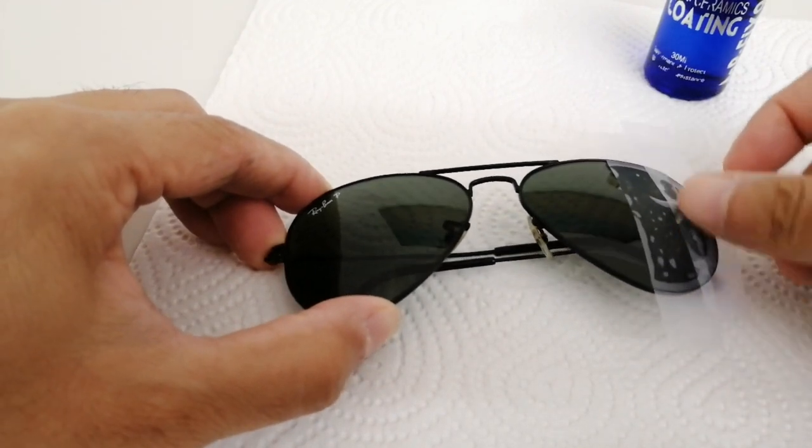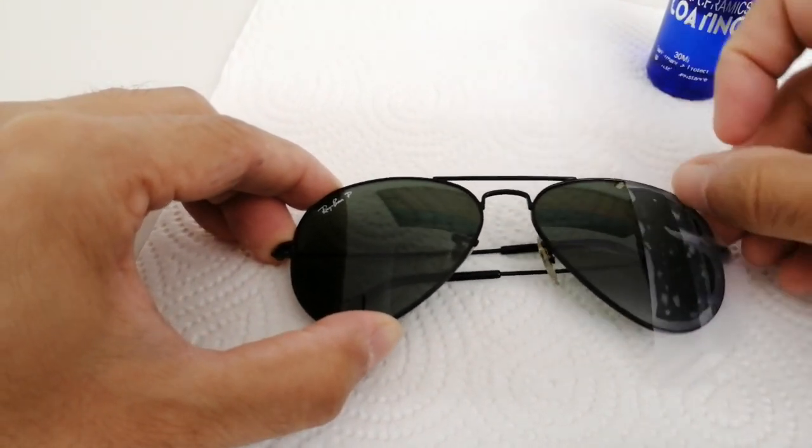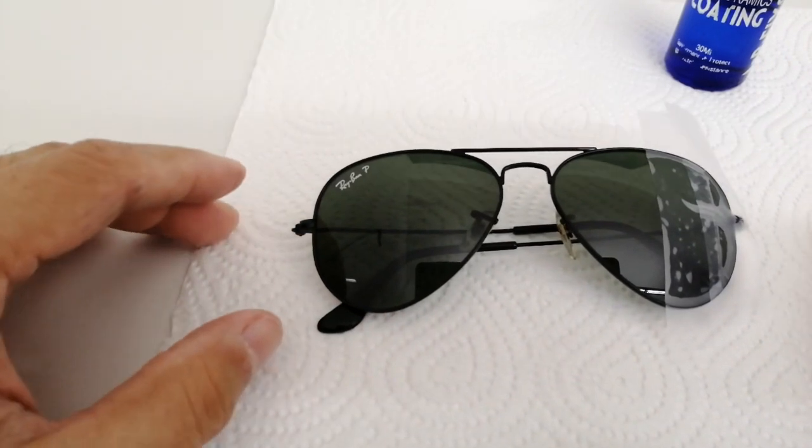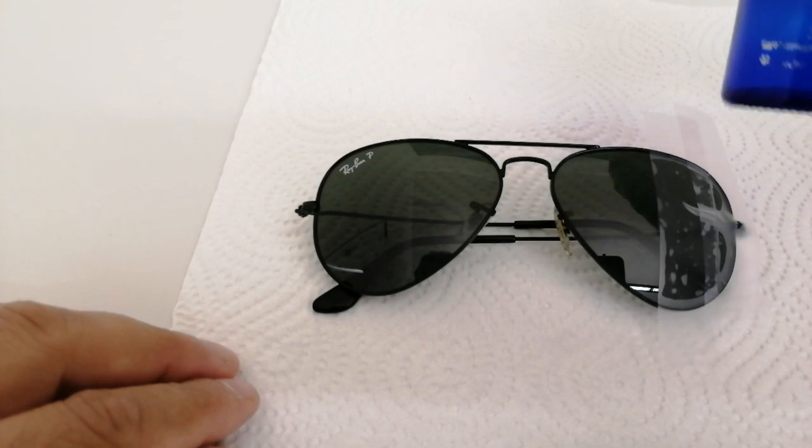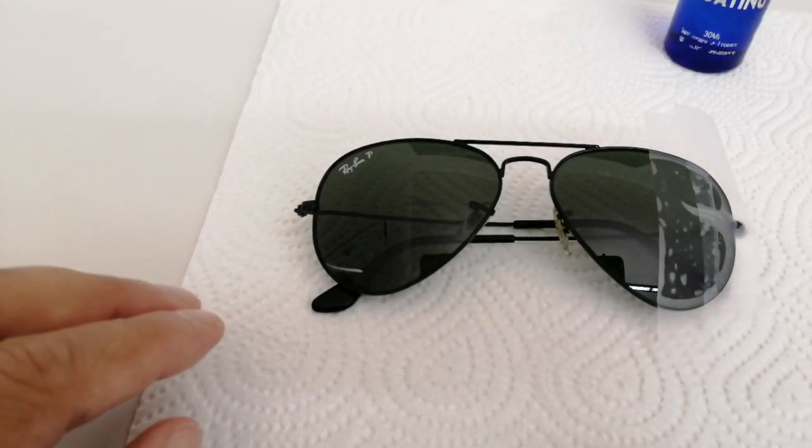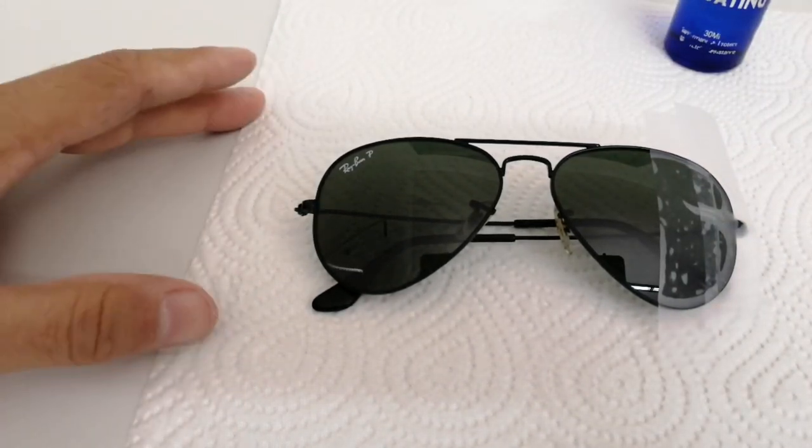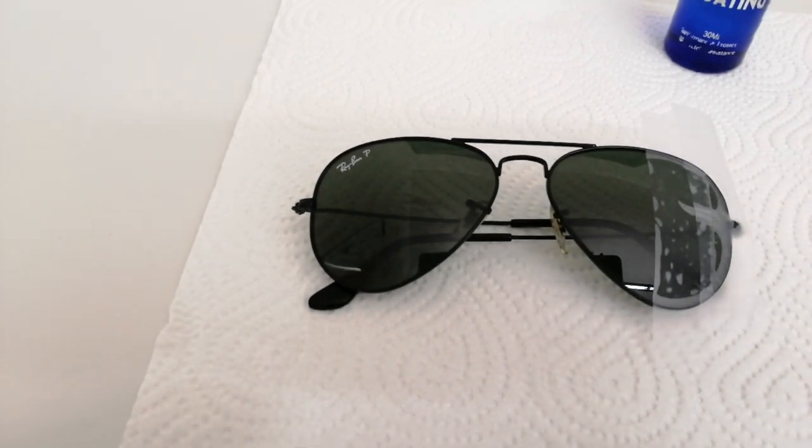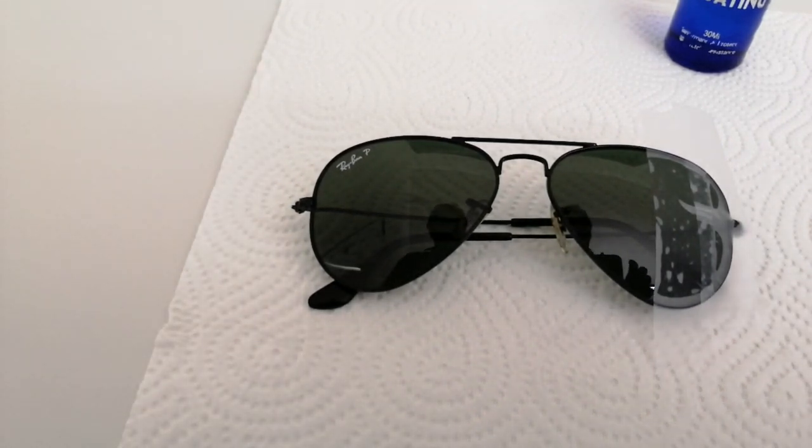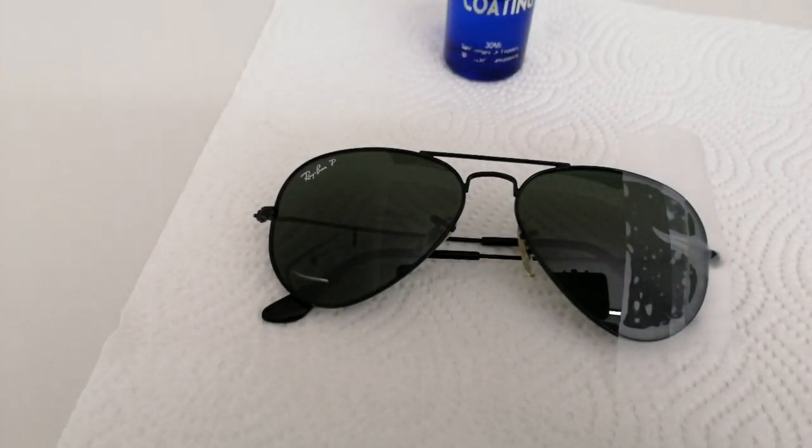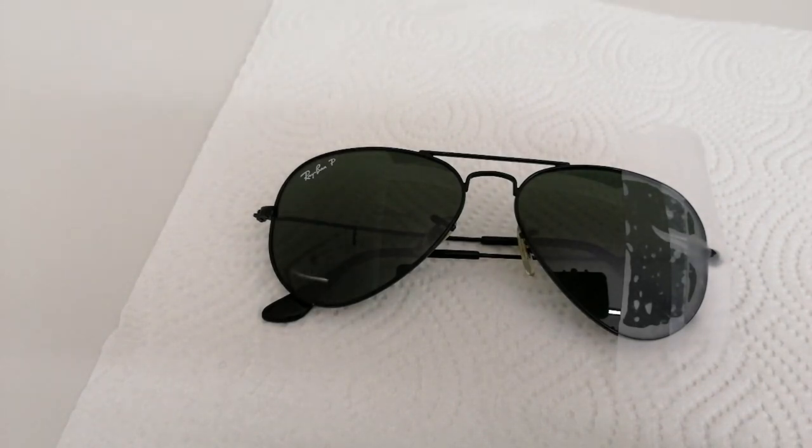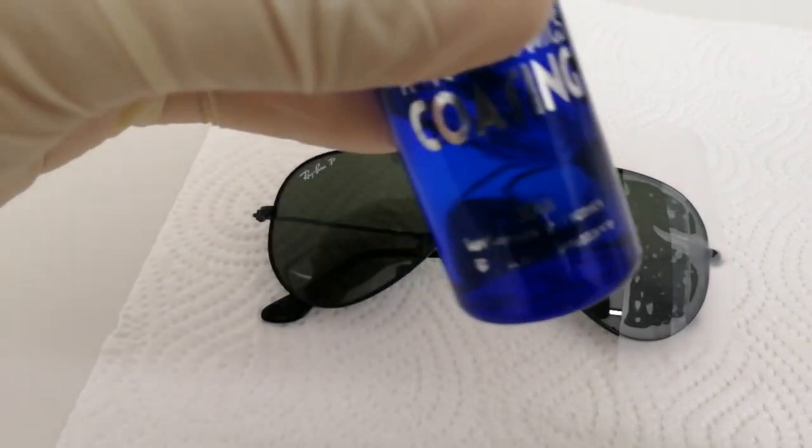Step number four: I'm going to coat the hydrophobic coating on this, but it's really important that you put on some gloves because this is silica SiO2 and you don't want that to get onto your hand. I'm going to use a towel that actually comes with the hydrophobic coating.